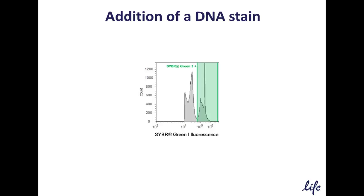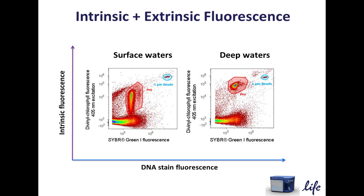It is also worth mentioning that fluorescent stains may be used in combination with samples that have intrinsic fluorescence. For example, inclusion of a DNA stain such as SYBR Green I in environmental marine samples enables fluorescence detection of total microbial content. Surface and deep water samples stained with SYBR Green I label all DNA-containing particles, but only the Prochlorococcus will stain positive for both SYBR Green I and divinyl chlorophyll, making that population distinct. Again, differences are seen between surface and deep water samples — surface waters have low divinyl chlorophyll abundance, whereas deep water samples have increased divinyl chlorophyll abundance.